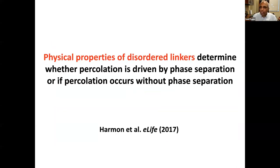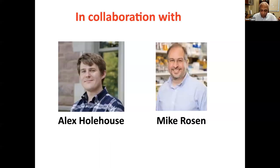The spacers are the culprits here. Their physical properties determine whether percolation is driven by phase separation — giving a spherical droplet inside of which you get a droplet-spanning network — or whether you go around phase separation and at some very high concentration make a gel or percolated network. This is the work of Tyler Harmon, a former graduate student, currently a postdoc in the lab of Frank Ulrich and Tony Hyman, with intellectual contributions from Mike Rosen and enabling contributions from Alex Holhaus.